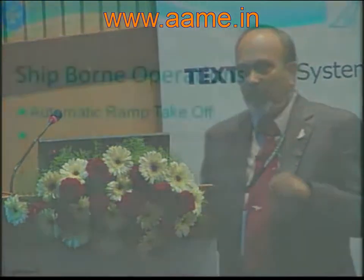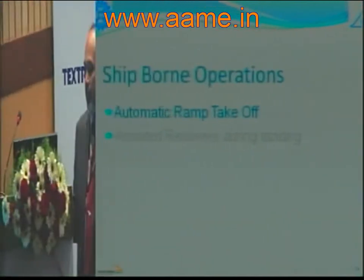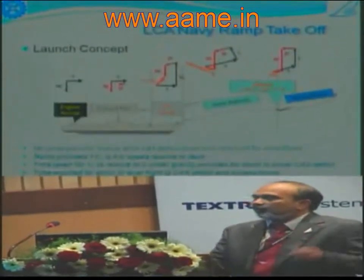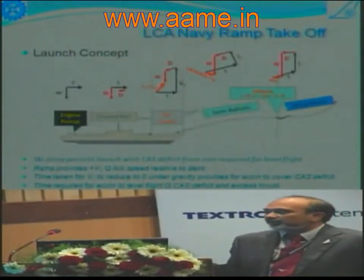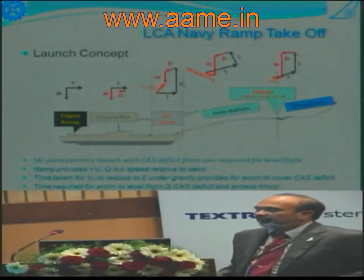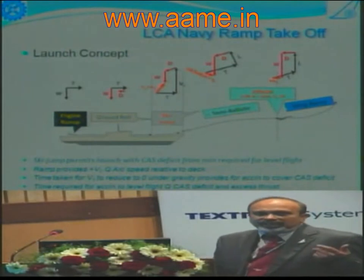The last thing I would like to show you is something that we have developed which is equally exciting, and we will be testing it very shortly at Goa on the ramp being built there — what is known as the automatic ramp takeoff. For a naval aircraft operating from a conventional runway, you have typically 600 to 800 meters of length to build up speed, build up lift, and take off. But in the case of a ship, you have only two choices: either you use a catapult to accelerate the aircraft to that speed, or — what many other countries like Russia do — you use a ramp, and the aircraft travels on the ramp, is released in a semi-ballistic trajectory, and ultimately becomes wingborne.